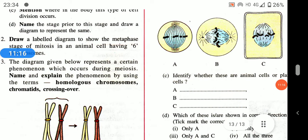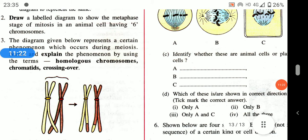The diagram represents a phenomenon occurring during meiosis. Name and explain the phenomenon using the terms homologous chromosomes, chromatids, and crossing over. Crossing over is the phenomenon of exchange of genes between two non-sister chromatids of homologous chromosomes.